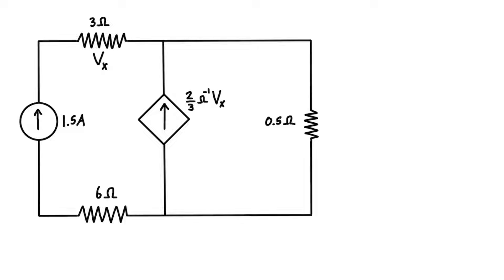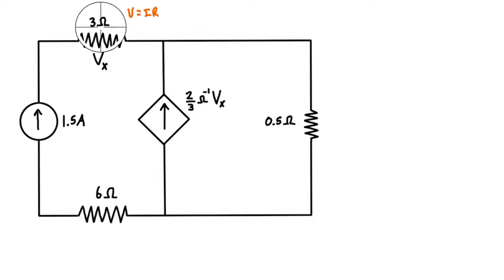To get started, let's find out what Vx is — this is our controlling voltage. It's actually quite simple: all we need to do is write V = IR (Ohm's Law), because we actually have the current. We know that the independent current source forces 1.5 amps through here, and we also know the resistance is 3 ohms. So Vx = 1.5 amps × 3 ohms = 4.5 volts. This is the positive side and the negative side because of the passive sign convention.